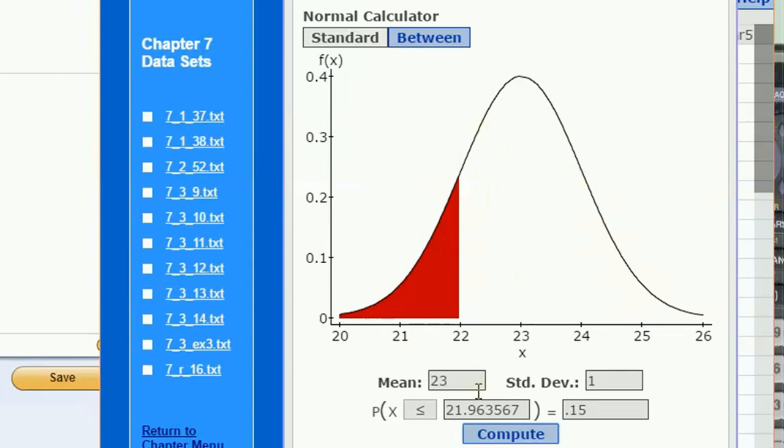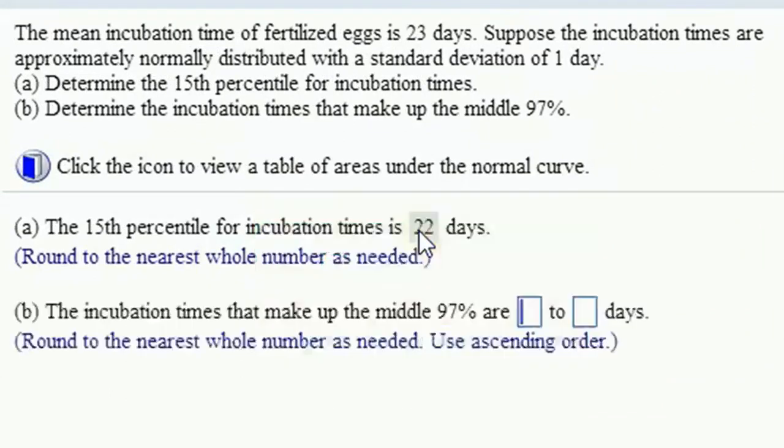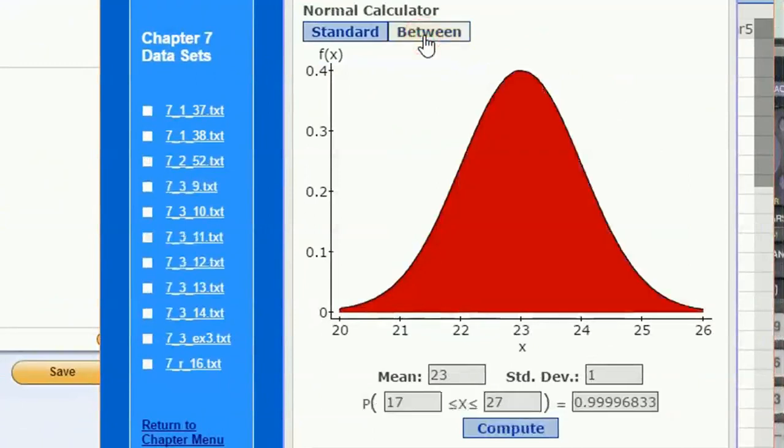I'm going to round to the nearest whole number, that's going to round to 22 days. The middle 97 percent can be found using the between calculator.